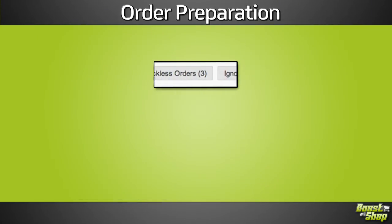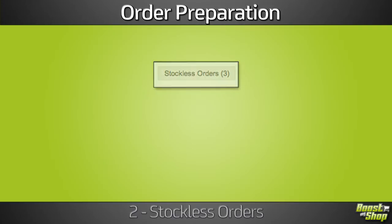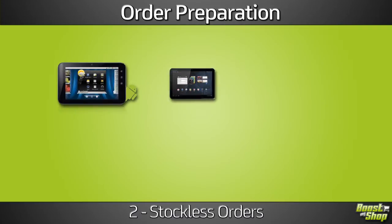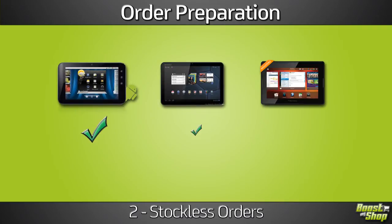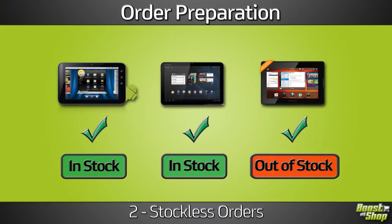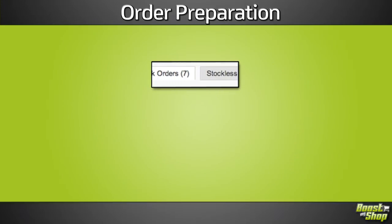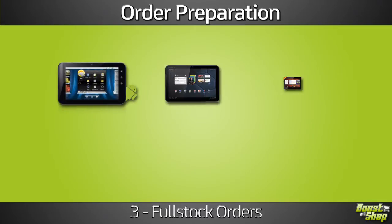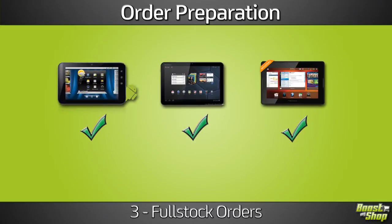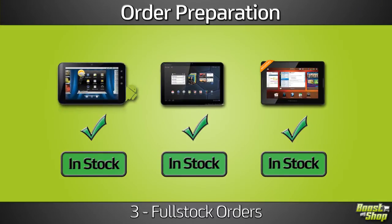Stockless orders. This group contains orders matching the validity conditions but containing at least one out-of-stock product. Full stock orders. This group contains valid orders for which every product is ready to ship.